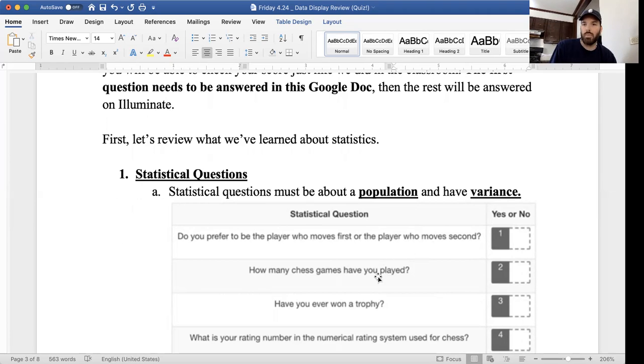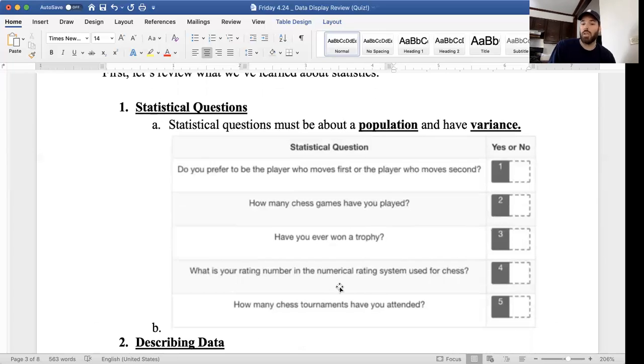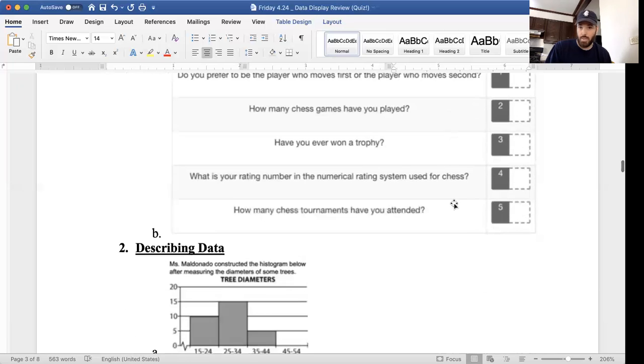How many chess games have you played? Zero. Okay. The population is just asking me and there's no variance because I'm only going to have one answer. That's not statistical. Have you ever won a trophy? Yes or no questions can't be statistical. That would be no. What is your rating number in a numerical rating system for chess? Now this does have variance as long as I'm asking more than one person. So if I was just asking me, there's no population. But if I were to ask this question to everyone in this class, then yes, it would be statistical. How many chess tournaments have you attended? Again, it depends who I'm asking. If you're just asking me, then the answer is no, it's not statistical. But assuming that I'm asking everyone in the class, yes, that's a whole population. Yes, there is variance because different people will give different answers.